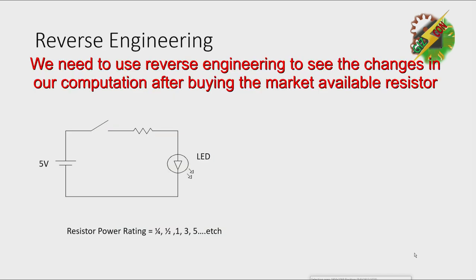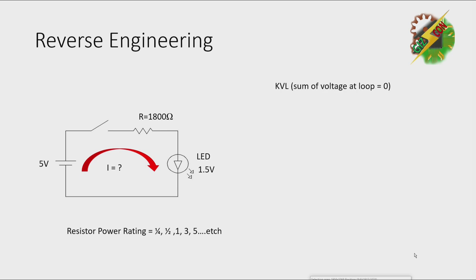Then to calculate the power rating of the resistor, we need to apply reverse engineering. Using the resistor that we're going to buy in the market, which is 1.8 kilo ohm or equivalent to 1800 ohms, we're going to compute the current using KVL, sum of the voltage at loop equals zero.